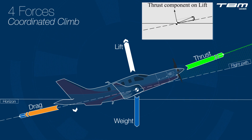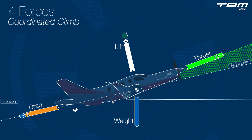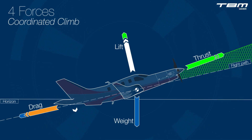Lift remains perpendicular to the flight path or relative wind. During climb, an angle of attack is created between the thrust line and the flight path, which provides a vertical component, increasing total lift. During a stabilized climb, climb performance is limited to the amount of excess thrust available at a given speed.